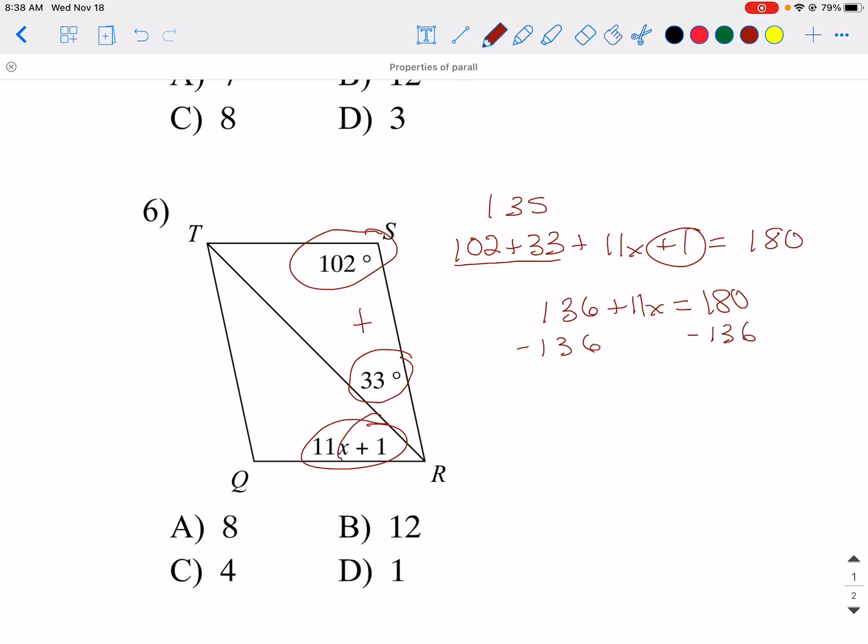So I'm going back to my calculator, Desmos, 180 minus 136. And I get 44. And then of course we divide by 11. So we get x equals 4.